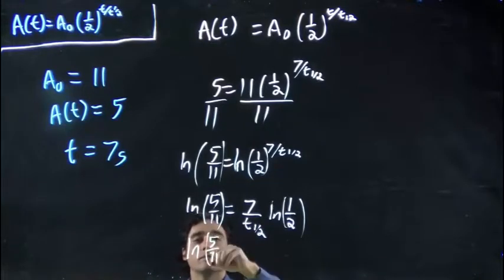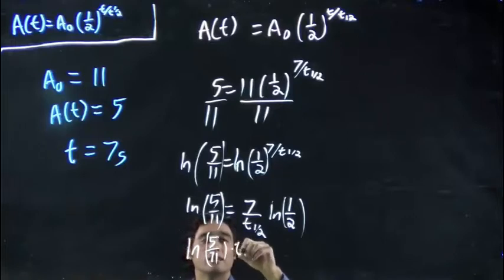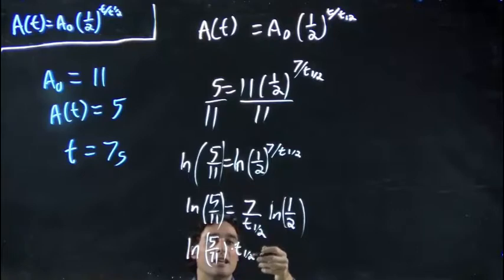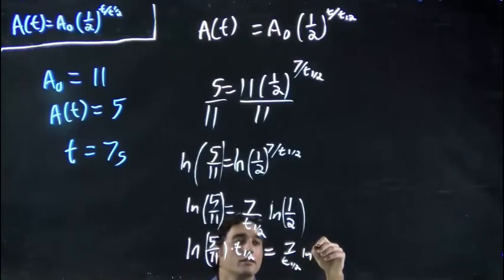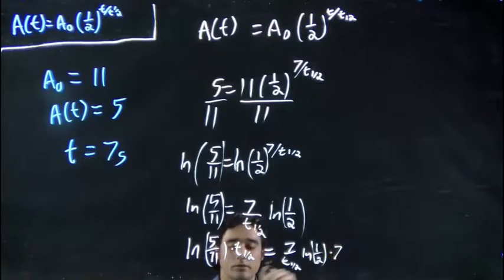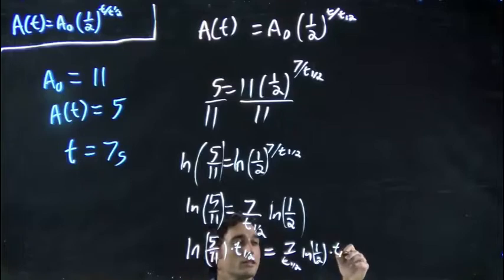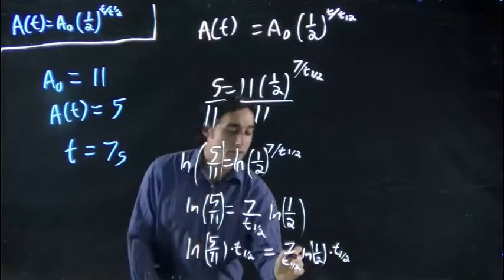ln of 5/11 times by t₁/₂. All right, this is just a subscript. This is just letting us know it's the half-life time. And that's equal to 7 times ln of 1/2. All times t₁/₂. Great. Those will cancel.